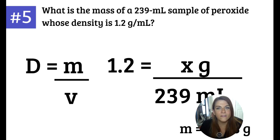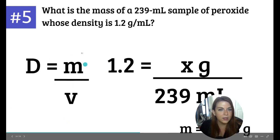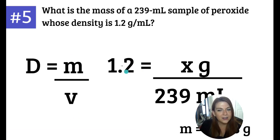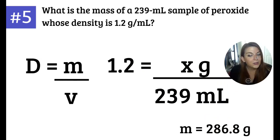And here is an example of solving for mass. What is the mass of a 239 milliliter sample of peroxide whose density is 1.2 grams per milliliter? Again, we write the equation D equals M over V. My density, see what I'm talking about here? I didn't include units. My density is 1.2 grams per milliliter. I'm going to cross multiply. 1.2 can go over one because it's a whole number. When we multiply this, we would be left with X on the other side. So it's 1.2 times 239 is equal to 1X or X. When you plug all of that in and solve it, you get 286.8 grams.